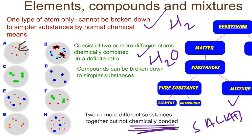Over here for C, we have one type of atom again — that's also an element. Now if you look at B carefully, you see two different compounds mixed together, so B would be a mixture. And D — we see one type of atom, one type of color, so that's going to be an element. On E, we see two different types of atoms, but they're not combined, so that's going to be a mixture.